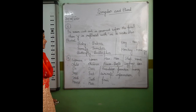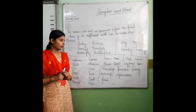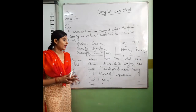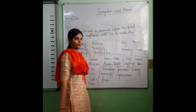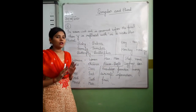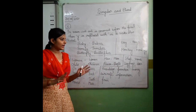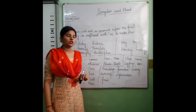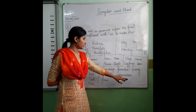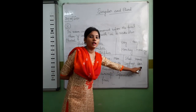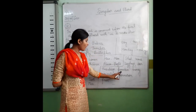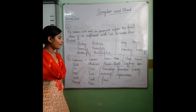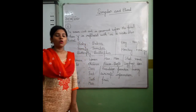And students, kuch aisi nouns hoti hain jinka singular bhi same hota hai aur plural bhi same hota hai. Like sheep — one sheep is singular, and more than one we also say sheep. Similarly: news, luggage, deer, knowledge, furniture, money, aircraft, information, and fruit.